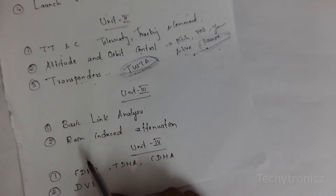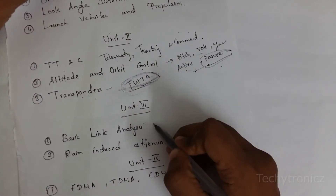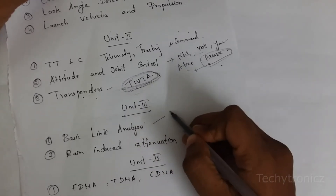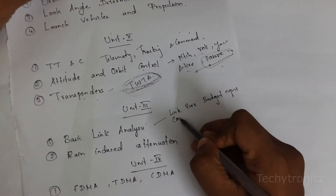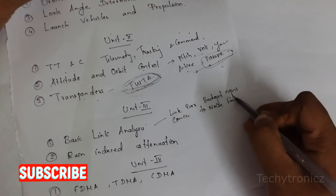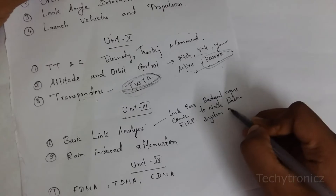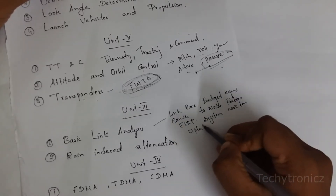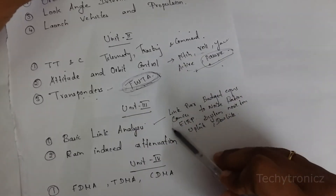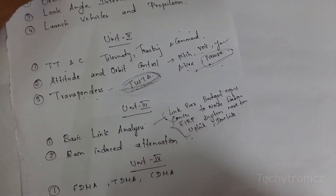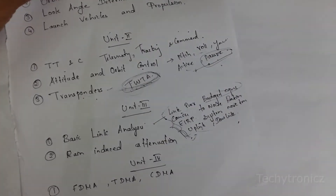When we go to unit 3, it is a very simple unit. The most important question is basic link analysis. In basic link analysis you have derivation-type content — the link power budget equation, EIRP, system noise temperature, uplink, and downlink. These are some parameters used in basic link analysis. If you learn the link power budget equation the remaining equations will be very easy to learn.